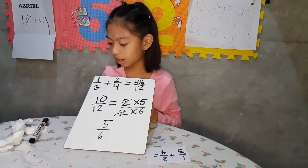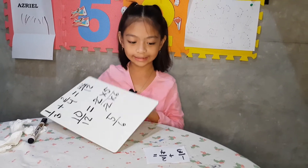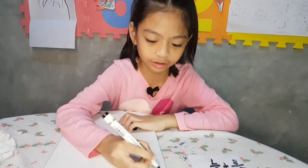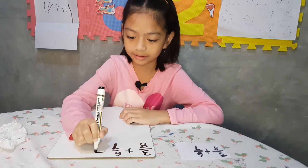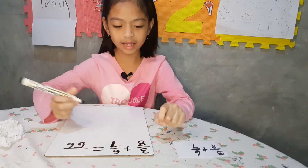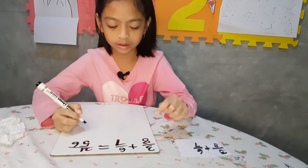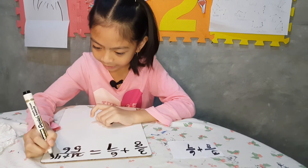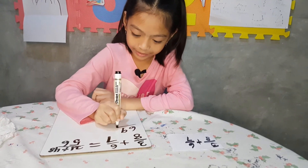The answer of 1 over 3 plus 2 over 4 equals 5 over 6. This is the last one. It's 3 over 8 plus 6 over 7 equals. 8 times 7 equals 56, and 3 times 7 equals 21, and 8 times 6 equals 48. So we have to add 21 and 48, and it's 69, over 56.